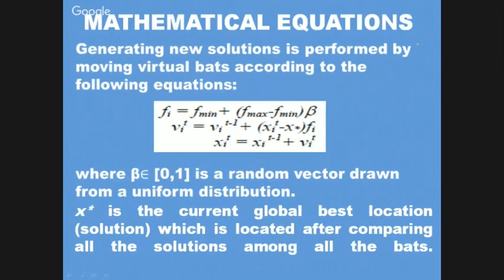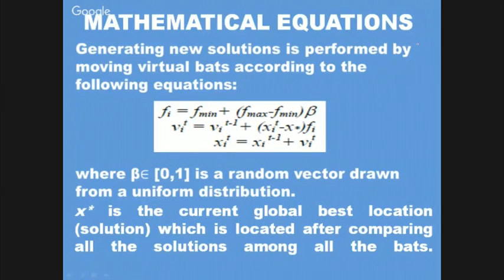For velocity update: if we assume the bat is at position 0,0 at the beginning, the initial and previous position remain the same. Otherwise, it takes the previous iteration's velocity, plus a change: X_i^t (the position of the present pixel) minus the best current global location across all pixels, multiplied by the frequency vector to give the velocity direction. Position update is the same as in other algorithms, taking care of previous location and velocity factor.